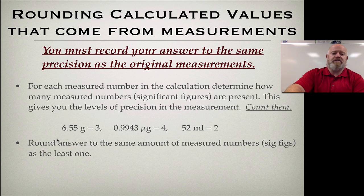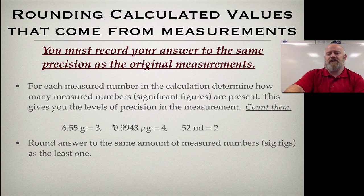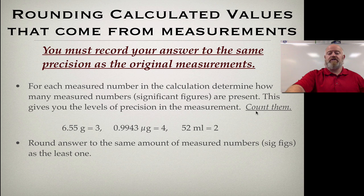For example, the number 6.55 has three layers of precision — three significant figures. For 0.9943, we get four significant figures. The leading zero doesn't count because mathematically we're required to put a zero in front of a decimal — it's just a placeholder. For the number 52, we have only two significant figures.